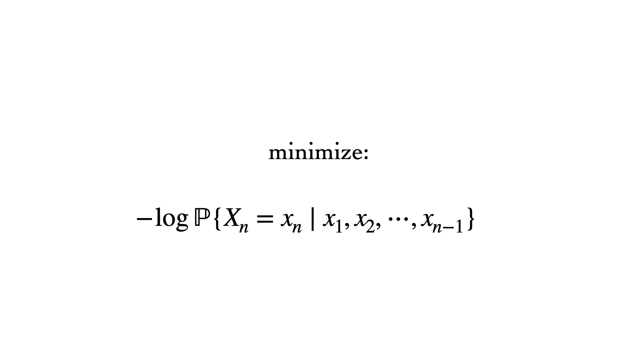The loss we'll try to minimize in either case is known as the cross-entropy or negative log likelihood loss. For a given sequence at a given time step, we'd like to minimize the negative of the log probability the model places on the true token, given the previously observed tokens. If we get rid of the negative, it's equivalent to maximizing the log probability of the true token.